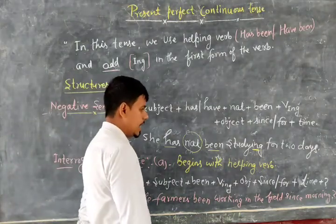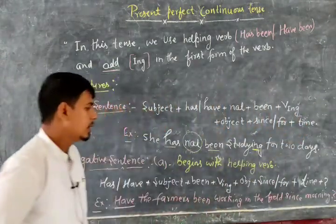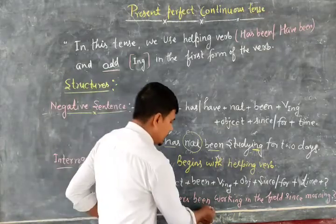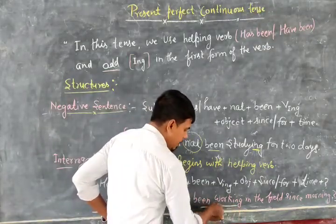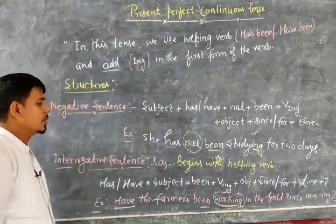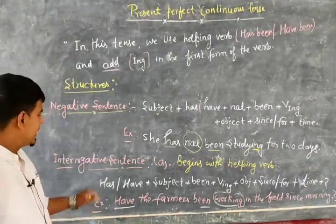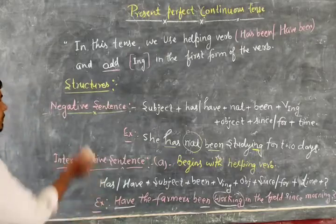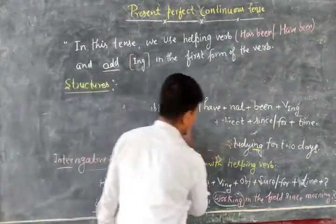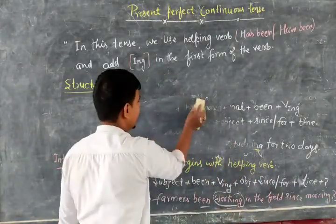You can see that the sentence starts with the helping verb, and at the end there is a question mark. So 'been' and the '-ing' form of the verb tell us that this is an interrogative sentence of the present perfect continuous tense.